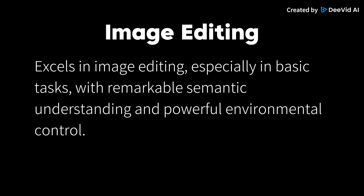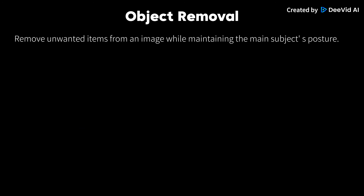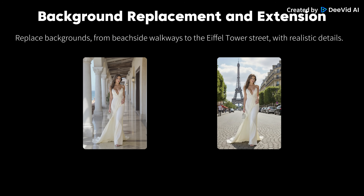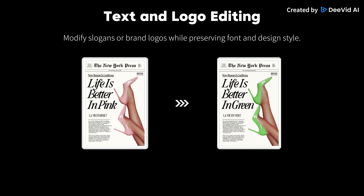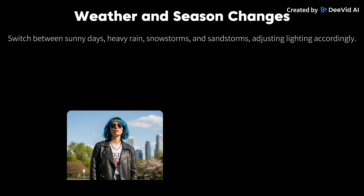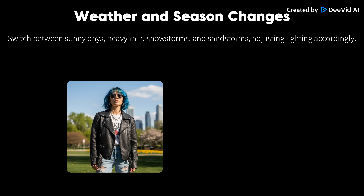Image editing excels in basic tasks. With remarkable semantic understanding and powerful environmental control, you can perform object removal — removing unwanted items from an image while maintaining the main subject's posture — background replacement and extension. Replace backgrounds from beachside walkways to the Eiffel Tower Street with realistic details. Text and logo editing: modify slogans or brand logos while preserving font and design style.